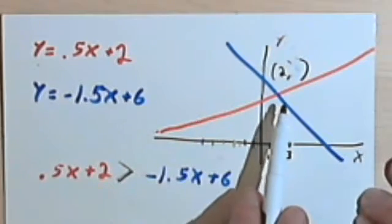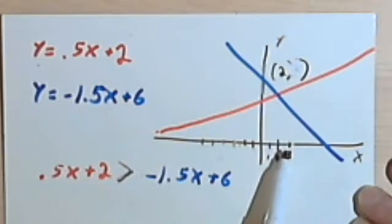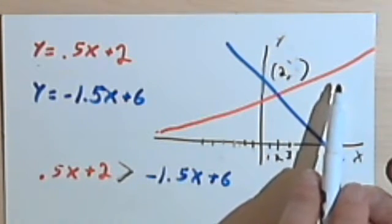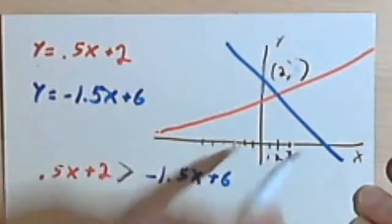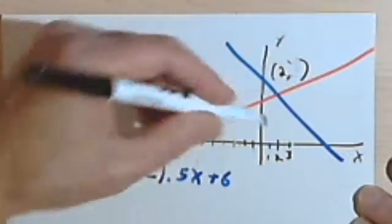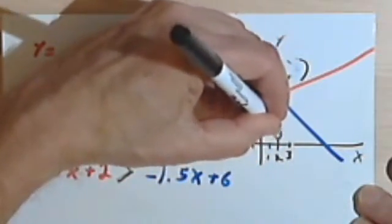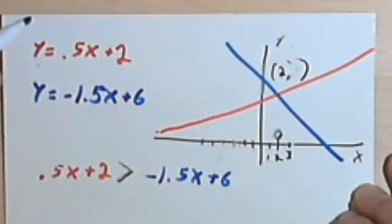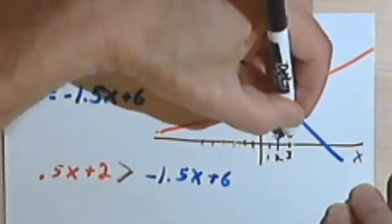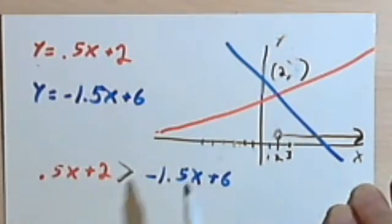Now, again, I'm only concerned with the x's, so I'm just thinking about what x-values allow that red line to be higher. Well, it seems like it would be all the x-values from 2 onward, not including 2, because 2 is where they're the same. So from 2 onward, I'm basically going to have this.